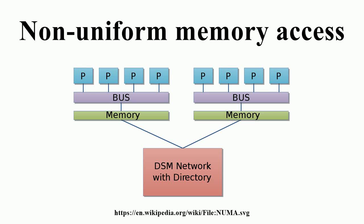For this reason, CC-NUMA may perform poorly when multiple processors attempt to access the same memory area in rapid succession. Support for NUMA in operating systems attempts to reduce the frequency of this kind of access by allocating processors and memory in NUMA-friendly ways and by avoiding scheduling and locking algorithms that make NUMA-unfriendly accesses necessary. Alternatively, cache coherency protocols such as the MESIF protocol attempt to reduce the communication required to maintain cache coherency.